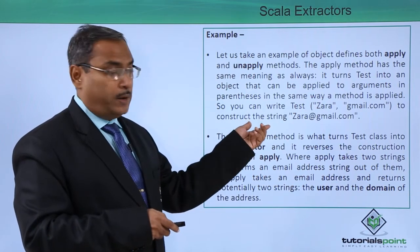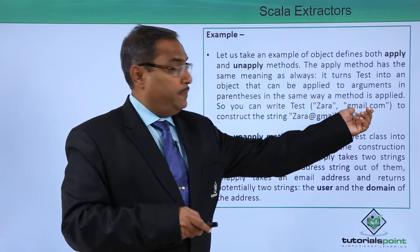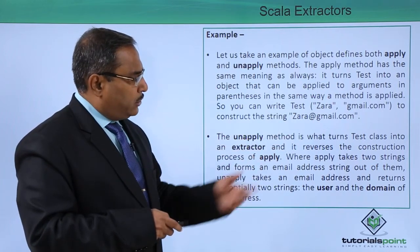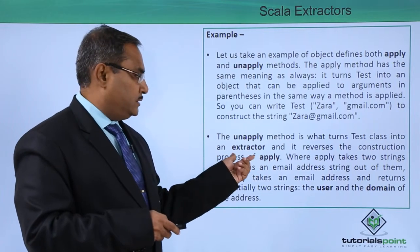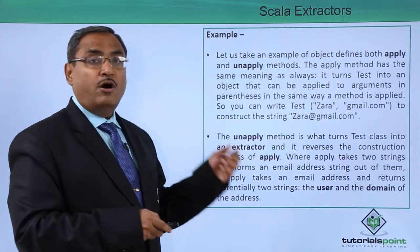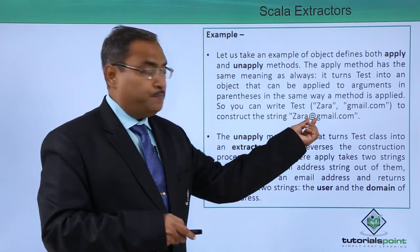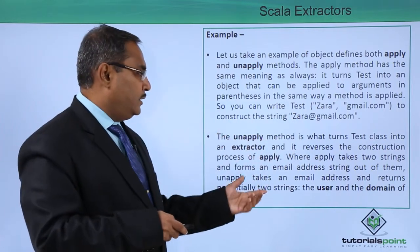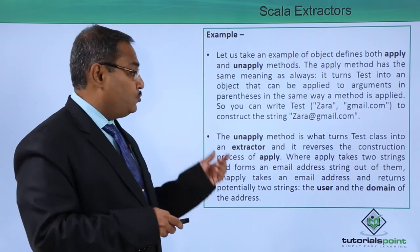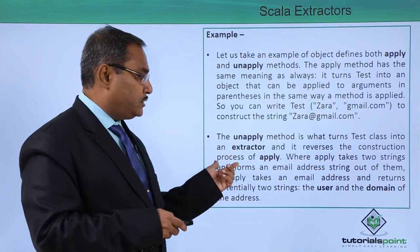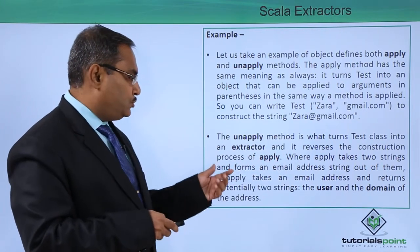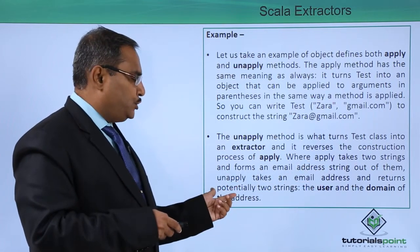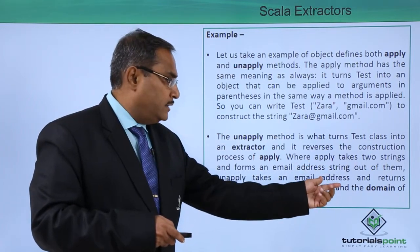Here we have mentioned that we take "Zara" and "gmail.com" and it will construct the string "Zara@gmail.com". The unapply method is what turns the test class into an extractor and it reverses the construction process of apply. So in the apply process we did the concatenation, putting the "@" in between, and in the unapply method we will do the reverse of that. So apply takes two strings and forms an email address string out of them, while unapply takes an email address and returns the two strings.